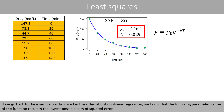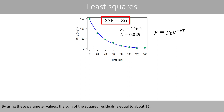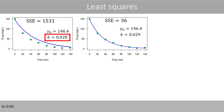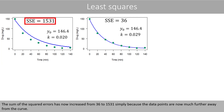Going back to the example from the video about nonlinear regression, we know that certain parameter values of the function result in the lowest possible sum of squared errors when we fit the function to this data. Using these parameter values, the sum of the squared errors is equal to about 36. Suppose we reduce the value of k from 0.029 to 0.02. Then the curve no longer fits well with the data, because most data points are below the curve, and the SSE increases from 36 to 1531.